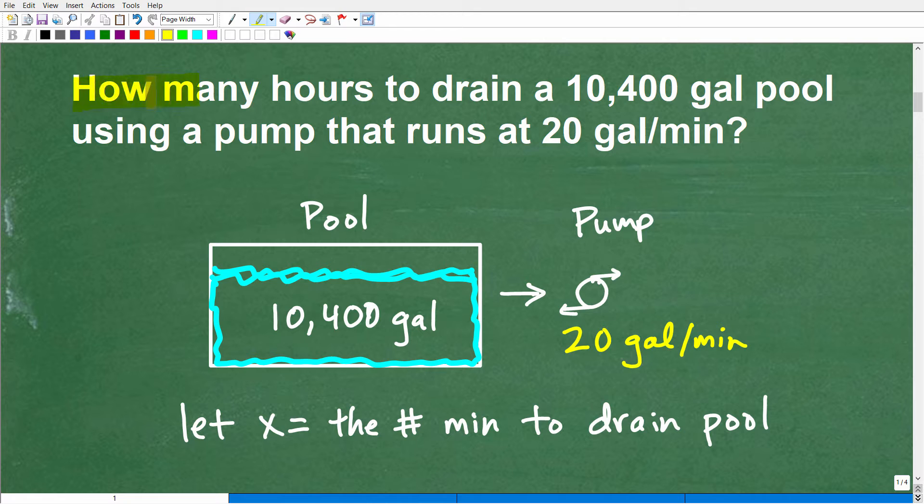All right. So, again, how many hours to drain a 10,000-gallon pool using a pump that runs at 20 gallons per minute? So there's a lot of information. Okay. But what is the real, what is, like, being asked here? Okay. And if I look at this, I go to this word, how many. Okay. What? How many what? How many hours to drain? All right. So here is really the question. How many hours, okay, to drain this pool?